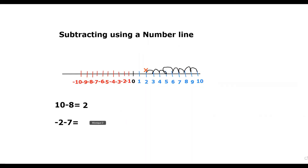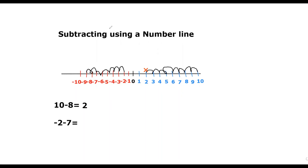Next we have negative 2 minus 7. Even though it may look a little more challenging, it's the same thing. We look for the first number — it's a negative 2 right here — and then minus 7, we are going to go towards the negative side. So we will go back seven times from negative 2: 1, 2, 3, 4, 5, 6, and 7. We found our answer right here and that is negative 9. So negative 2 minus 7 equals negative 9.